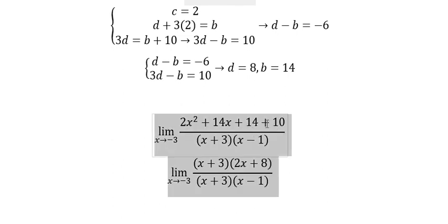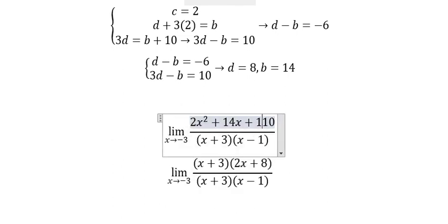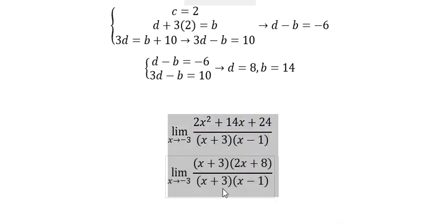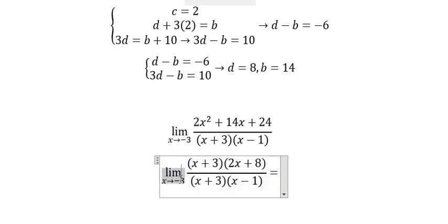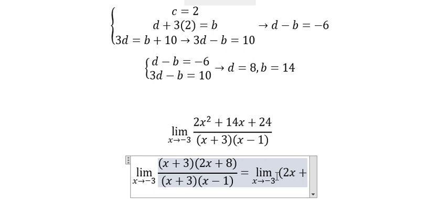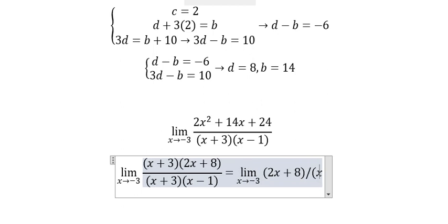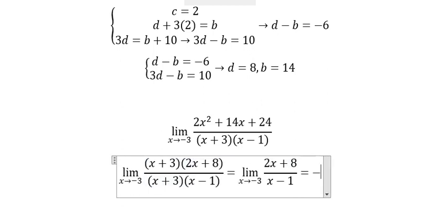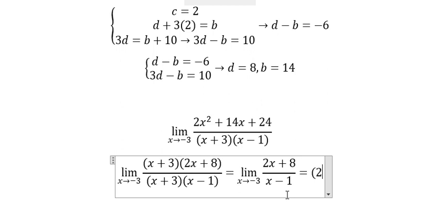Putting these values back into our limit: the numerator becomes 2x² plus 14x plus 24, which factors as (x+3)(2x+8). So the limit is (x+3)(2x+8) over (x+3)(x-1). We can simplify by canceling (x+3), leaving (2x+8) over (x-1).